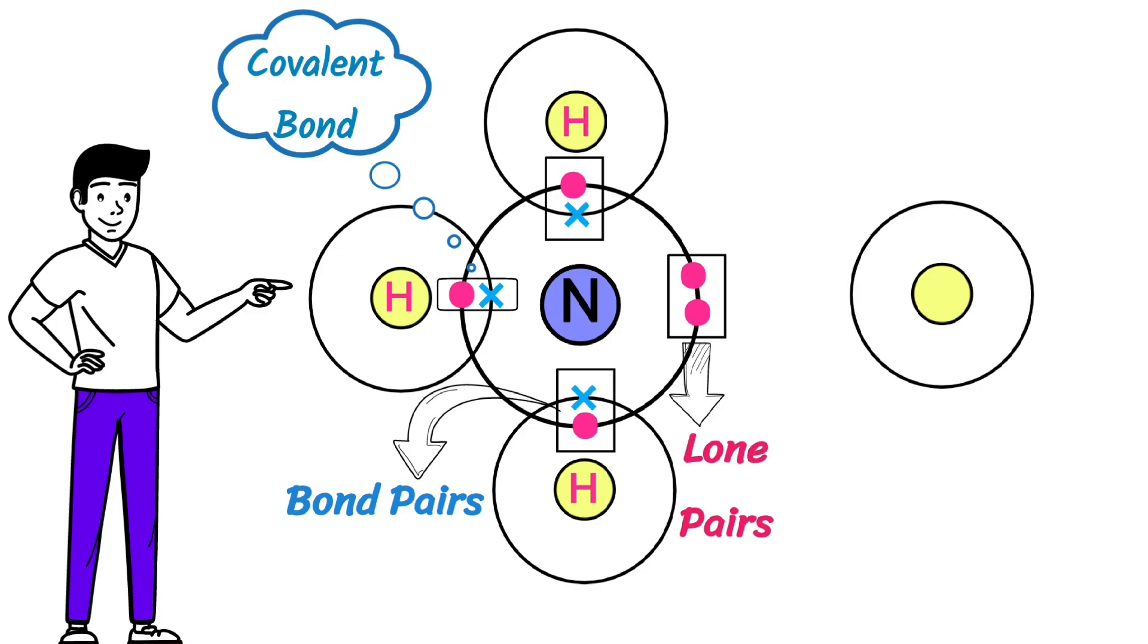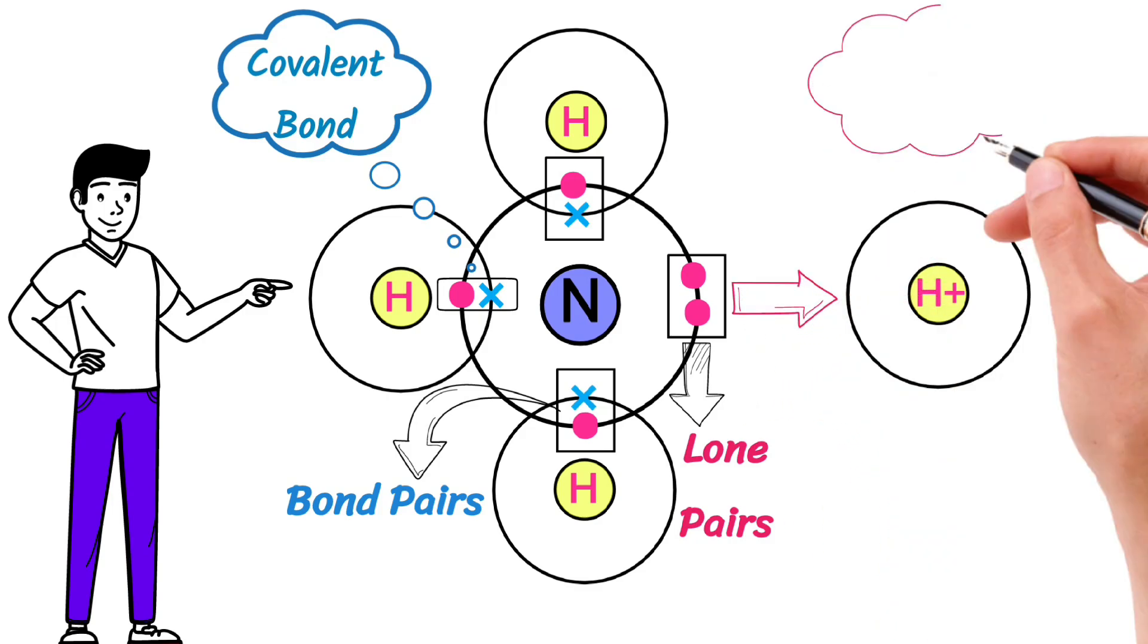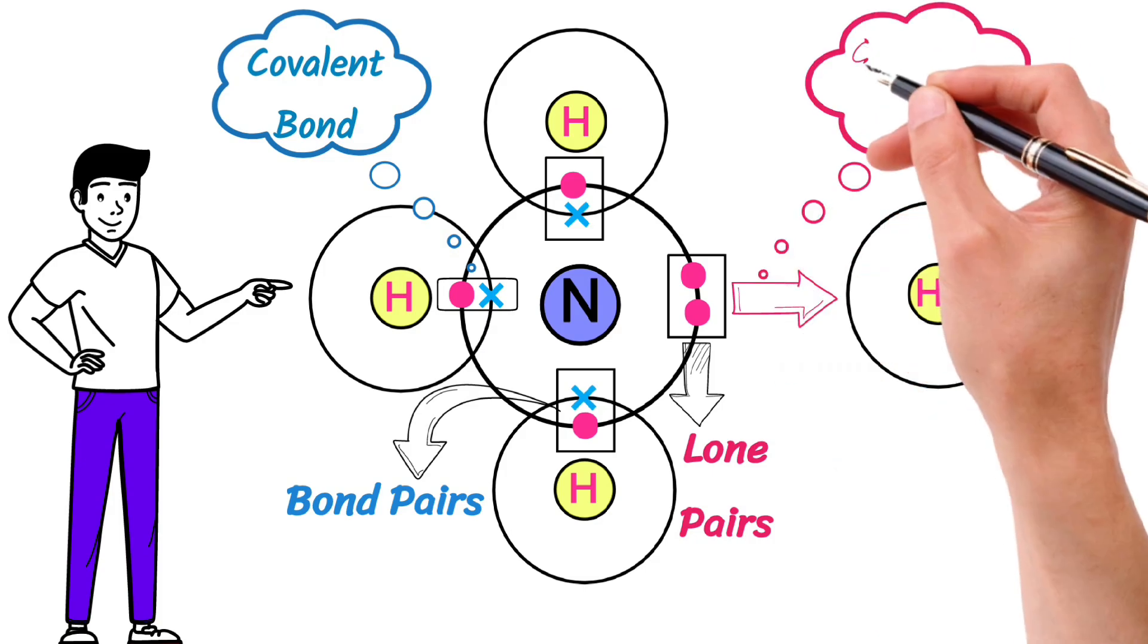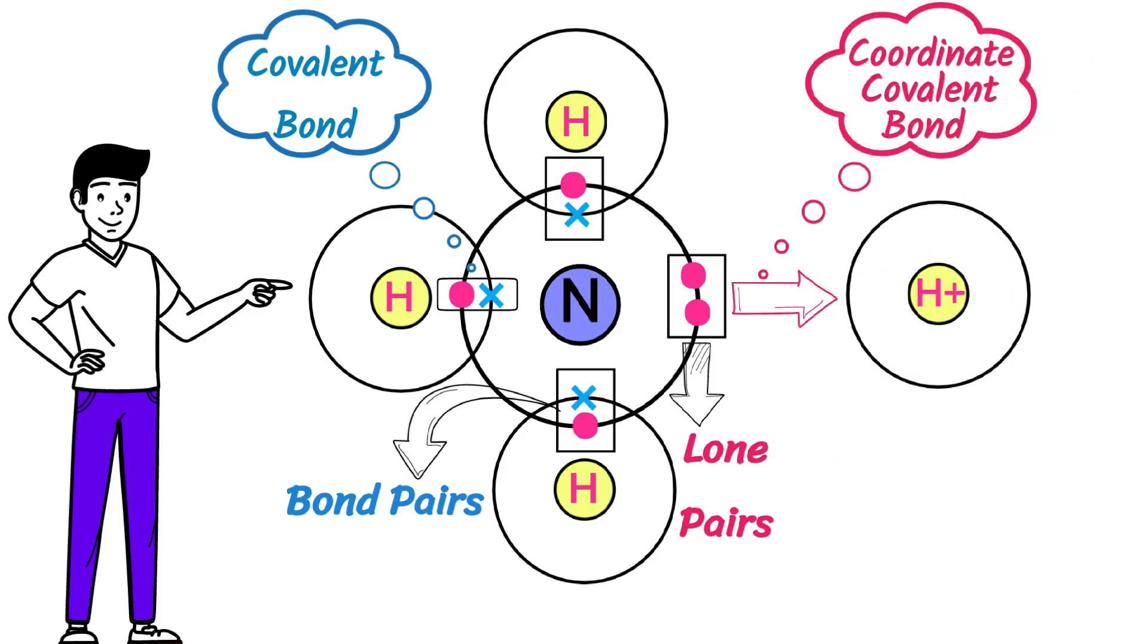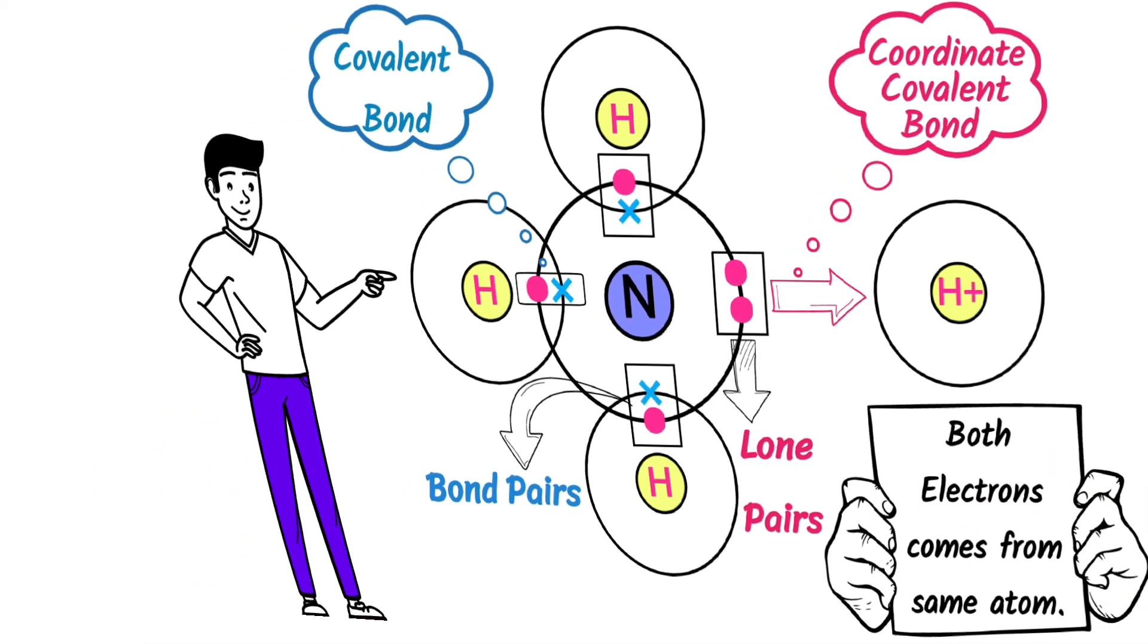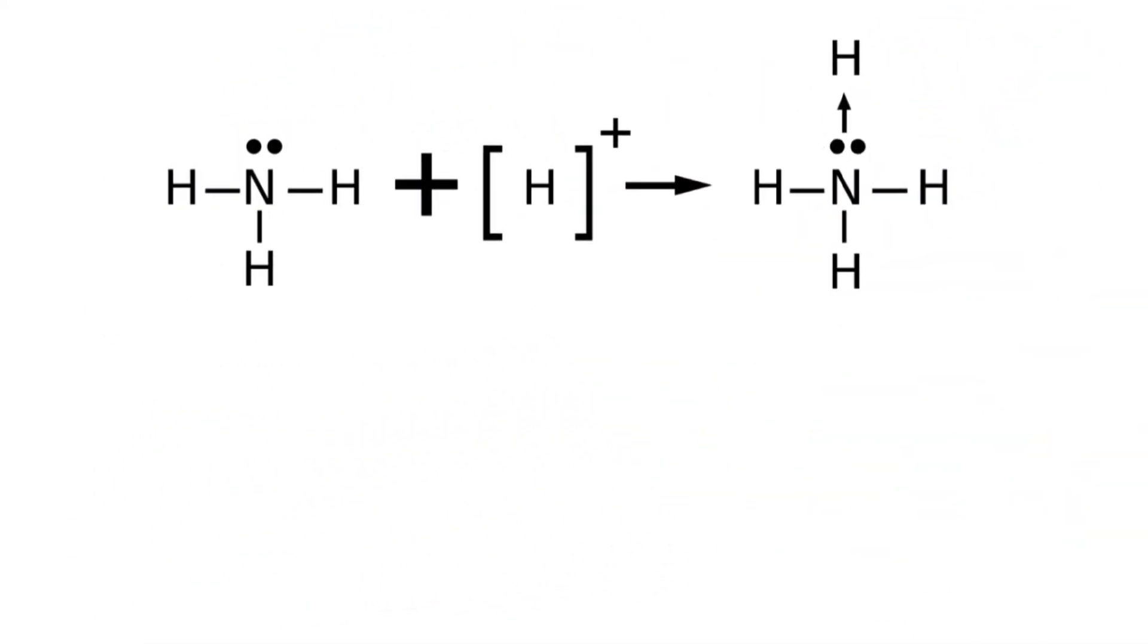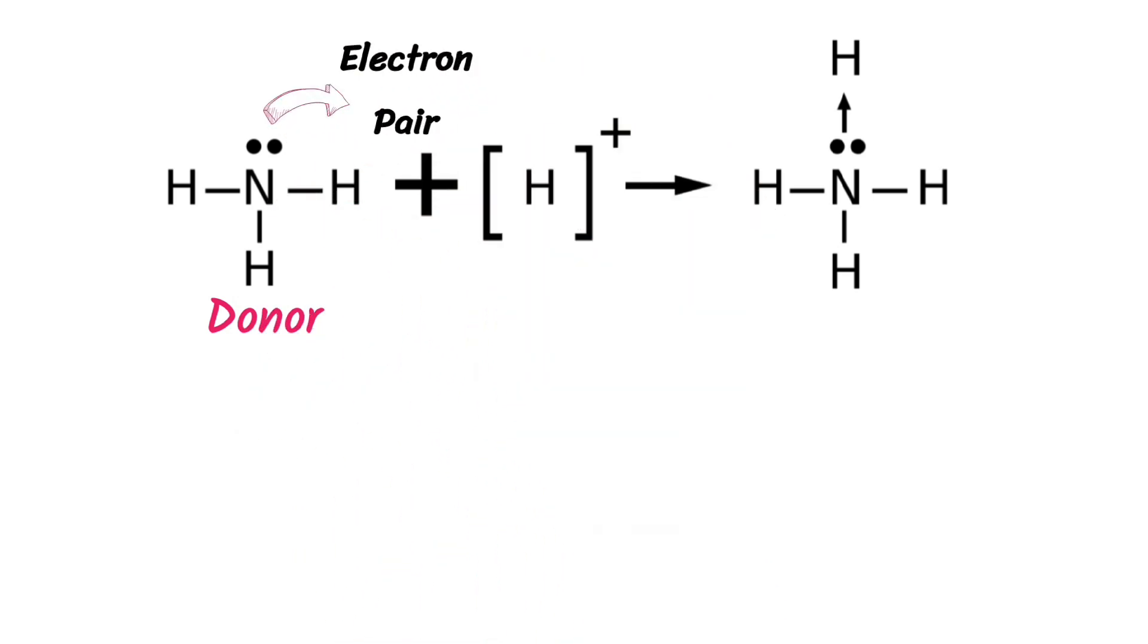When a positively charged hydrogen comes along, nitrogen atom donates its lone pair to hydrogen ion. This creates a bond known as coordinate covalent bond. So it is a type of chemical bond in which both electrons comes from same atom. So the nitrogen atom in ammonia is a donor because it donates its electron pair to the empty orbital of hydrogen ion.